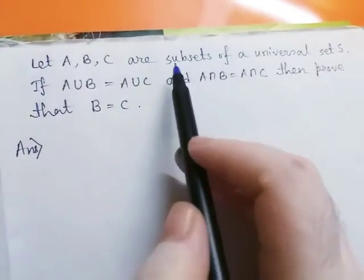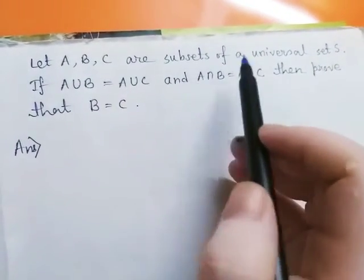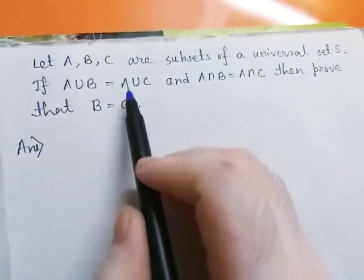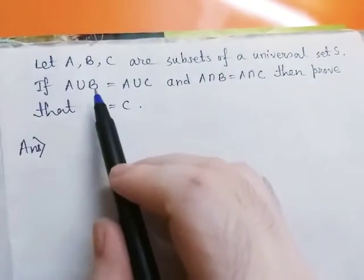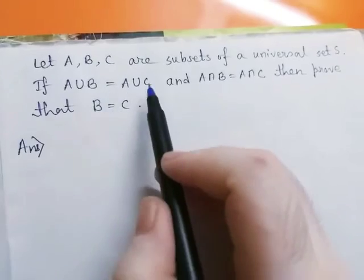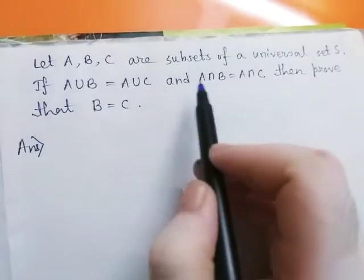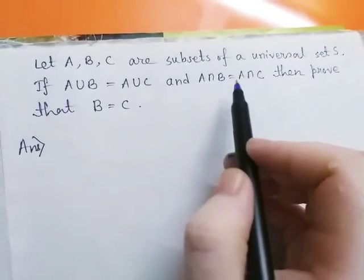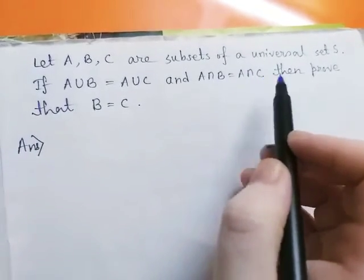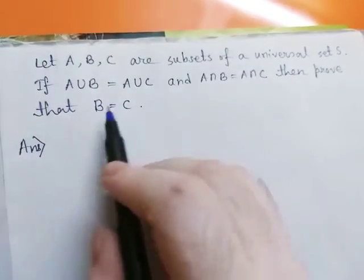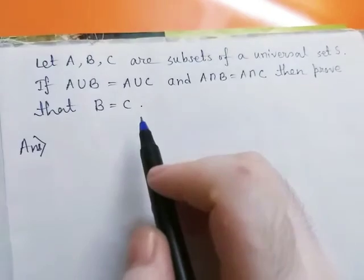Let A, B, C be subsets of a universal set S. If A union B equals A union C and A intersection B equals A intersection C, then prove that B equals C.